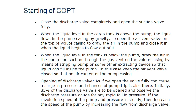For starting the COPT, there is a sequence to follow — similar to a centrifugal pump. Close the discharge valve completely and open the suction valve fully. When the liquid level in the cargo tank is above the pump, liquid flows into the pump casing by gravity — open the air vent valve at the top of the volute casing so air can escape, as air will prevent proper suction. When the liquid level in the tank is below the pump, draw the air from the pump and suction through the gas vent on the volute casing by means of a stripping pump or other extracting device.